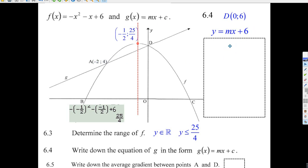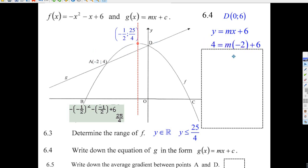Now we've got a point, minus 2 and 4. We substitute that point in there. That's how we do it. We let x equals minus 2. We let y equals 4.